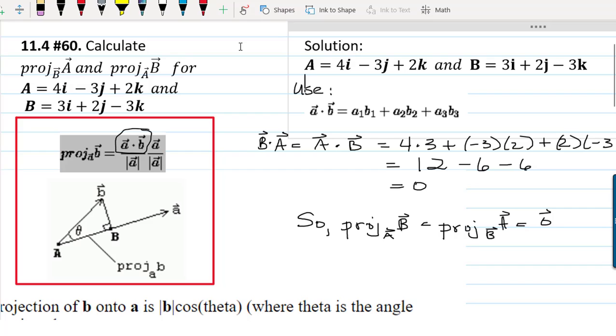And so you might think, that's strange. How can we have a projection that's equal to zero? But it's really not that strange. If you think about it, it is possible if the two vectors are perpendicular or orthogonal, right?